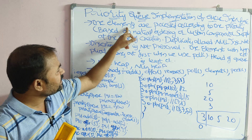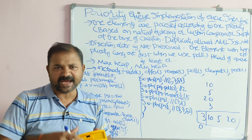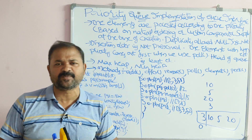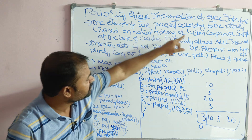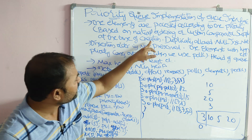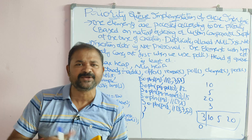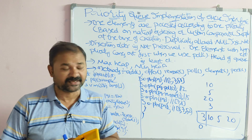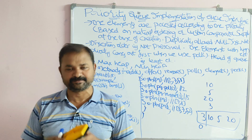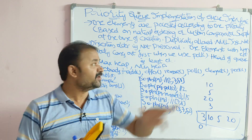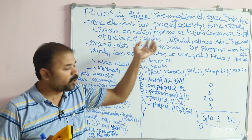The elements are processed according to their priority. In Priority Queue, elements will be processed based upon their priority — either based on natural ordering or a custom comparator supplied at the time of creation. Natural ordering means the smallest element gets the highest priority. The second way is by using a custom comparator. Let us see how we can do that.